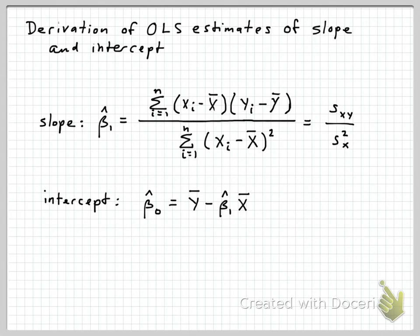The ordinary least squares estimates of the slope and the intercept - we've looked at those formulas before, and they look a little complicated, but they're really derived from very simple things that we can calculate from the data.